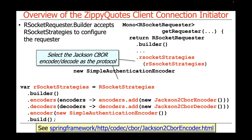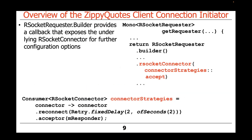We're also going to set up something called the simple authentication encoder. That's basically what's used to do a simple password and login name authentication mechanism. We then use the RSocket connector fluent method in order to set up the connector strategies.